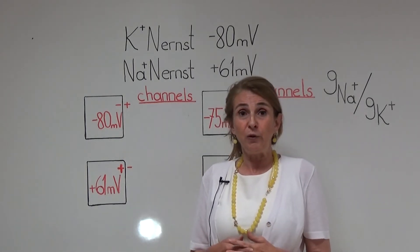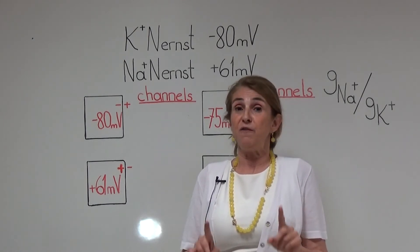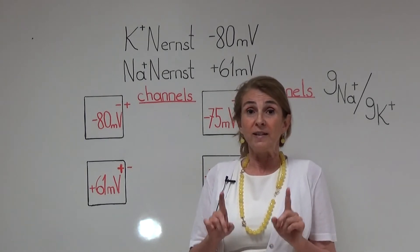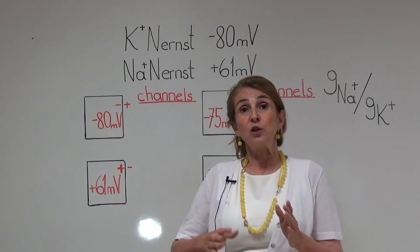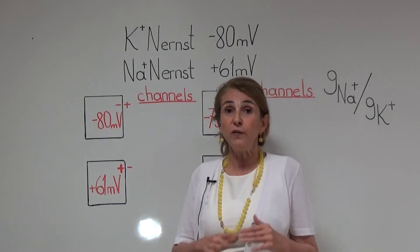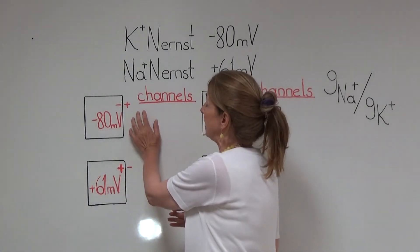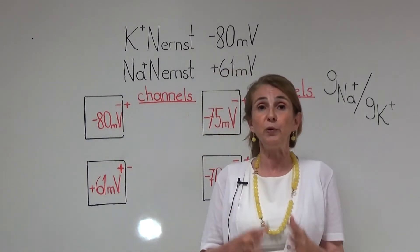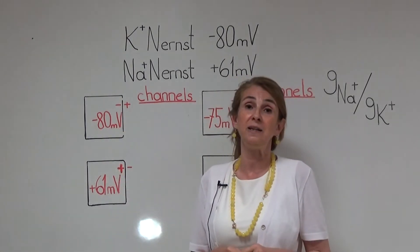As I have explained in another video, any ion with a concentration difference, if it finds an open channel for itself, will try to make the membrane potential equal to the Nernst potential of that ion. Please pause the video and consider: if you were to produce this cell in the lab, which ion channels would you prefer to put on the cell membrane to get a resting membrane potential of minus 80 mV?